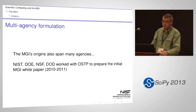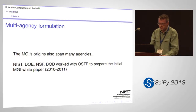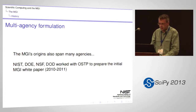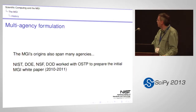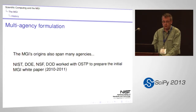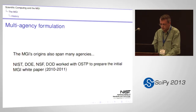The MGI's origins also span many agencies. NIST certainly had many conversations about this over many years. But the actual white paper had participation from the Department of Energy, the National Science Foundation, the Department of Defense — all of whom worked with the Office of Science and Technology Policy, a unit of the West Wing of the White House. And they prepared the initial white paper.